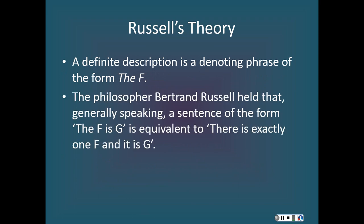The philosopher Bertrand Russell held that, generally speaking, a sentence of the form 'the F is G' is equivalent to 'there is exactly one F, and it is G.' That is: there exists an X such that X is F, and for any Y, if Y is F, then Y is identical to X — that part says there is exactly one F — and X is G, meaning the thing that is the one F is G. This is Russell's theory of definite description.